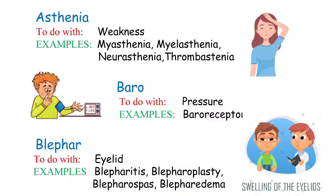The next term is 'baro,' which means pressure. When you hear 'baro,' picture a boy having his blood pressure tested. An example is baroreceptors — sensors that sense blood pressure, also known as presoreceptors. Located in the carotid sinus and aortic arch, they sense blood pressure, relay the information to the brain, and help maintain blood pressure without fluctuations.